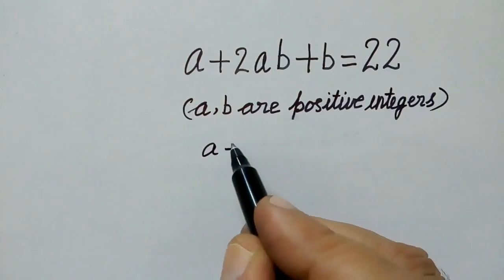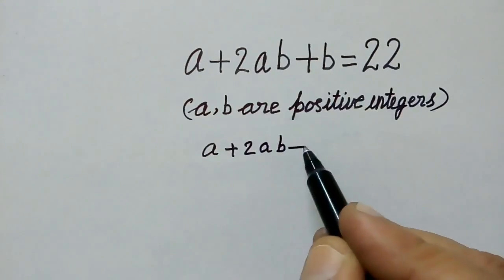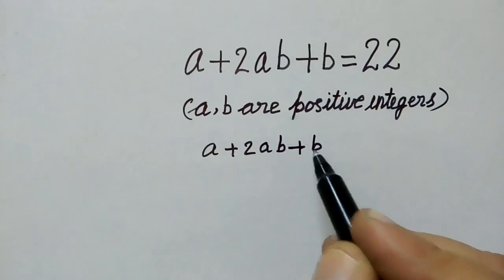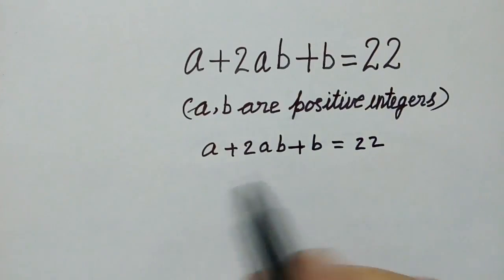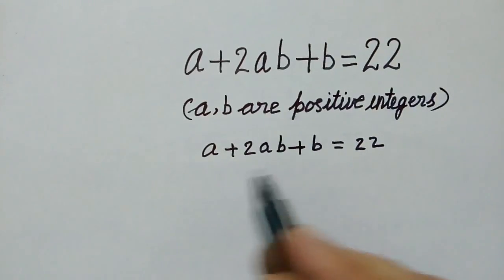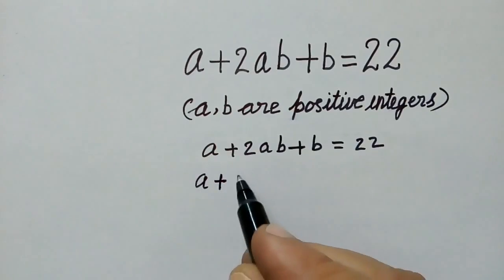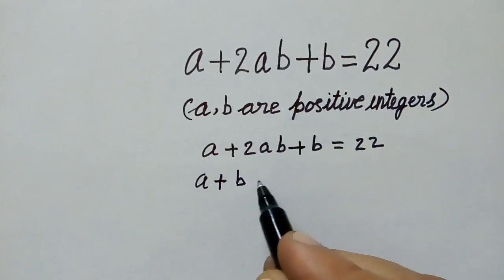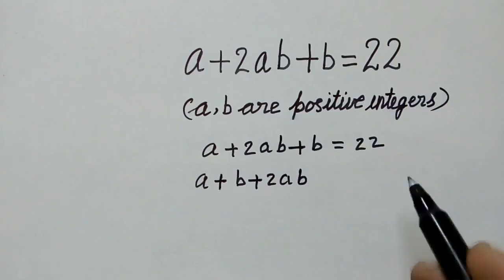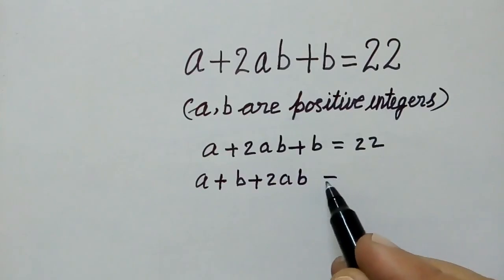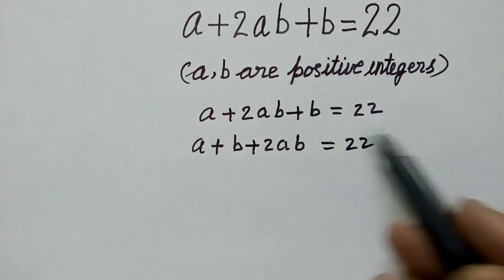a plus 2ab plus b is equal to 22. Now we rearrange the equation: a plus b plus 2ab is equal to 22. We can write it like this.